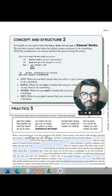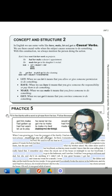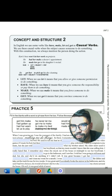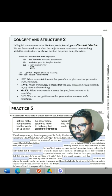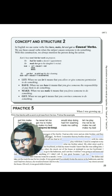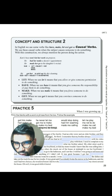We have here concept and structure number two. In English we use some verbs like 'have,' 'make,' 'let,' and 'get' as causal verbs. We use these causal verbs when the subject causes someone to do something. With this construction we always mention the person doing the action. For example: Cari's boss won't let her work on projects. He had her make a doctor's appointment. He made her go to his daughter's recital.